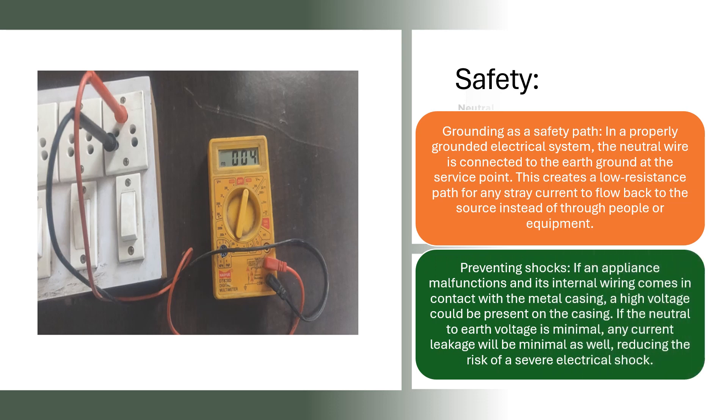Preventing shocks. If an appliance malfunctions and its internal wiring comes in contact with the metal casing, a high voltage could be present on the casing. If the neutral to earth voltage is minimal, any current leakage will be minimal as well, reducing the risk of a severe electrical shock.